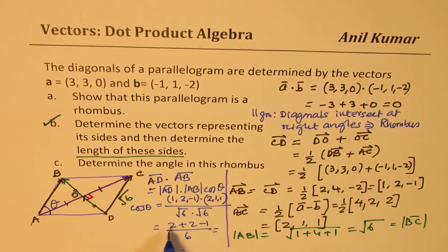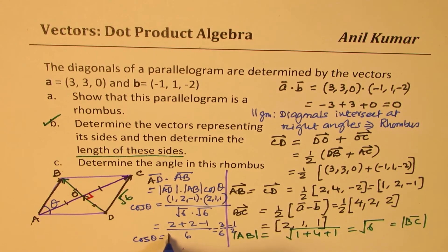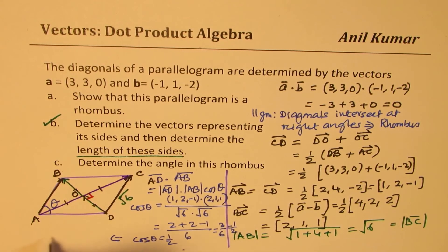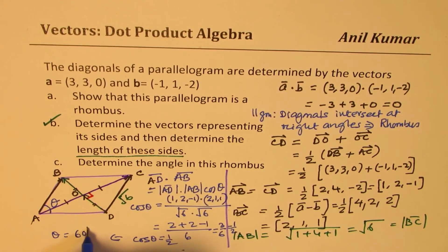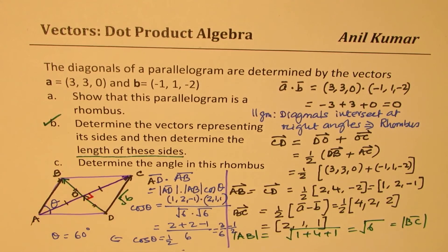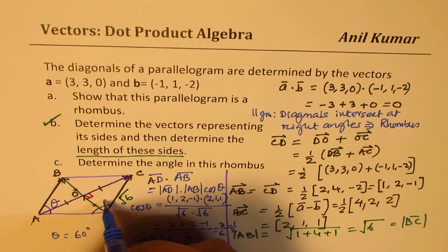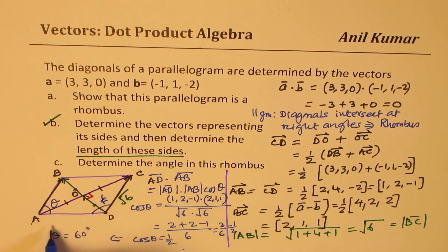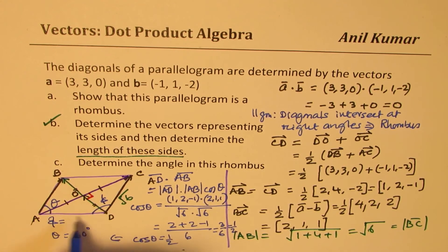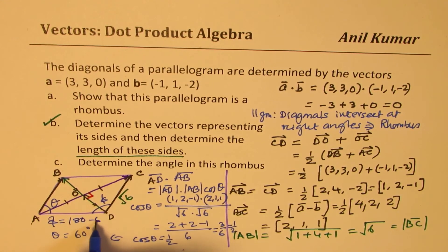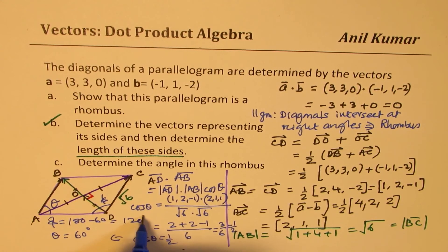And that is 2 plus 2, 4 minus 1, 3. So 3 over 6 or equals to half. So we have cos theta equals to half, that means theta equals to 60 degrees. So we get one angle as 60 degrees. The other one will be, let's call this as phi. So phi is going to be 180 minus 60, which will be 120 degrees.